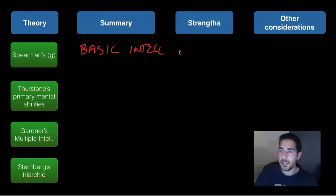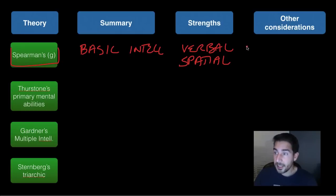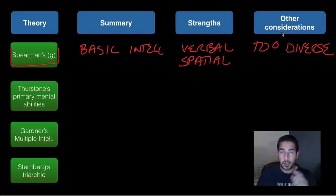A strength is that different abilities like verbal abilities and spatial abilities tend to have a strong correlation. So it tends to lead to some support of Spearman here. Another consideration or maybe a weakness is that human abilities are really too diverse to limit to just one factor. We've got so many different things that we can be good at and intelligent at. So maybe just putting in one pill or one bottle is a little too limiting.